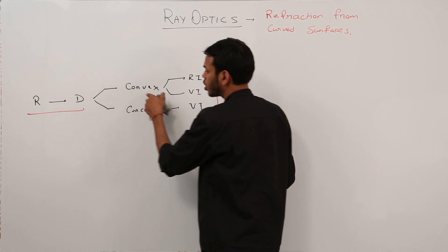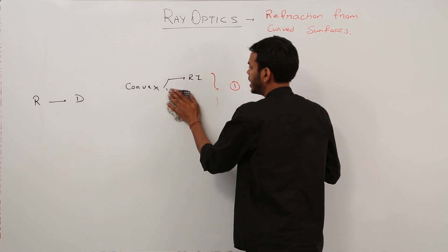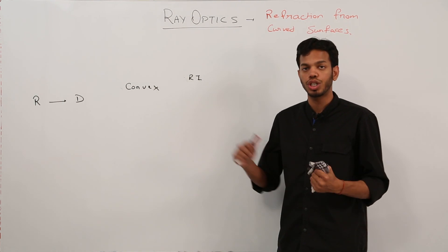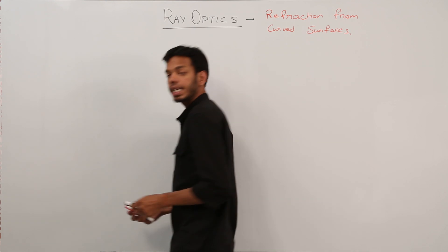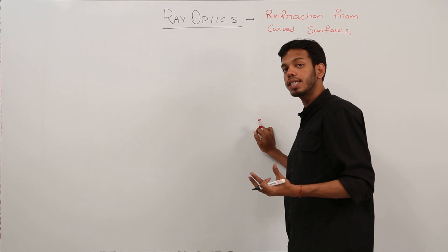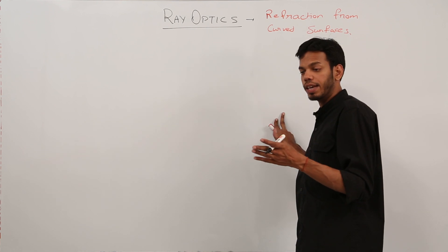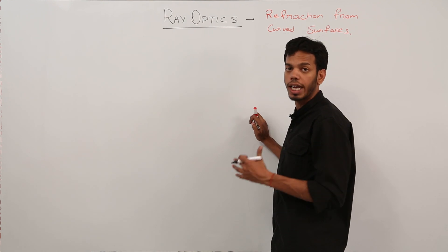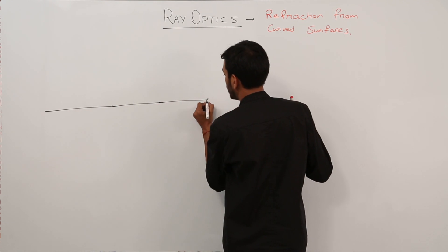We will do rarer to denser with a convex surface giving a real image. How are questions expected from this topic? The question would be: find a relation between object distance, image distance, radius of curvature, and refractive indices of two mediums when refraction is taking place from rarer to denser or denser to rarer. They can also specify the position of the object, which will automatically tell you the direction of refraction.